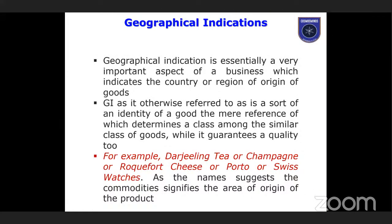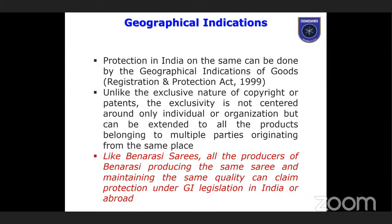Geographical Indications (GI) are very important in business, used to indicate the country or region of origin of goods. GI is a sort of identity of a good which distinguishes it within a class of similar goods. Examples include Darjeeling tea, Assam tea, Champagne, Roquefort cheese, Porto wine, and Swiss watch. Protection in India is done under the Geographical Indications of Goods (Registration and Protection) Act 1999. For example, all producers of Banarasi saree who maintain the same quality can claim a GI tag on Banarasi sarees.